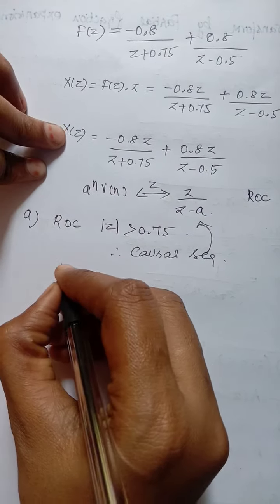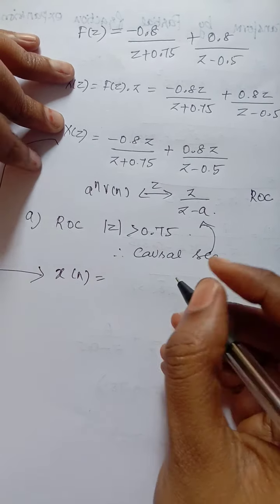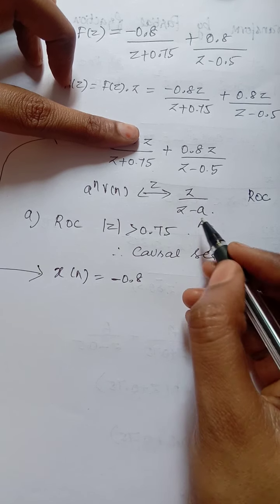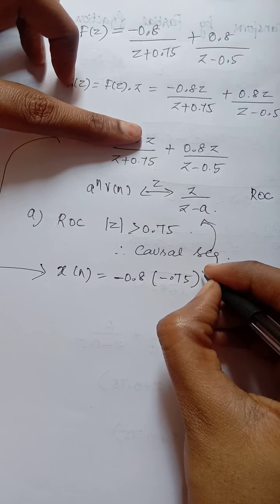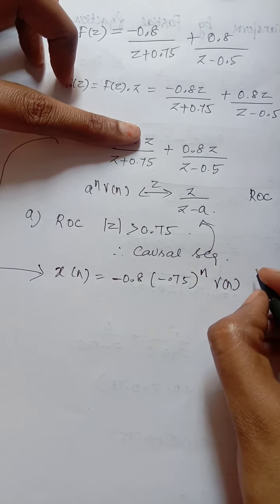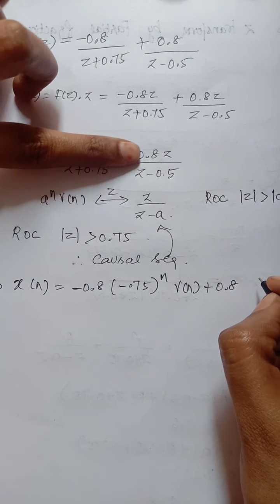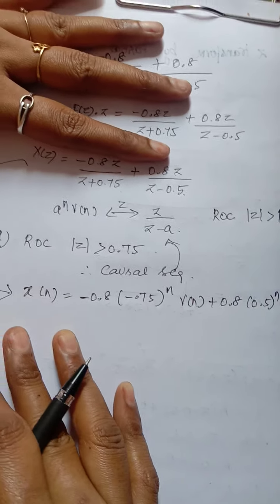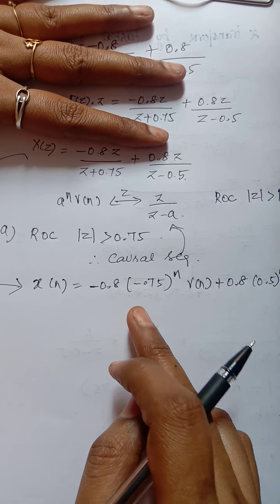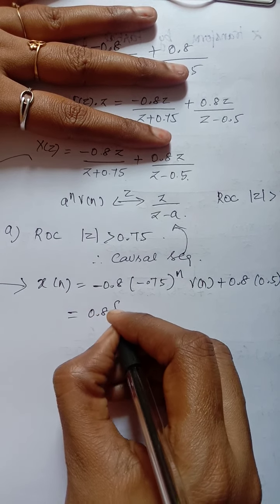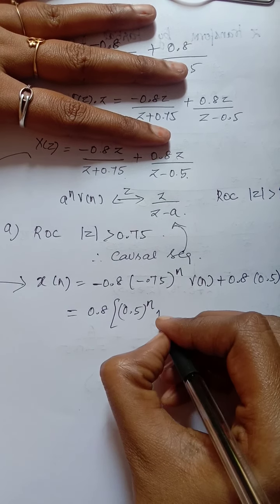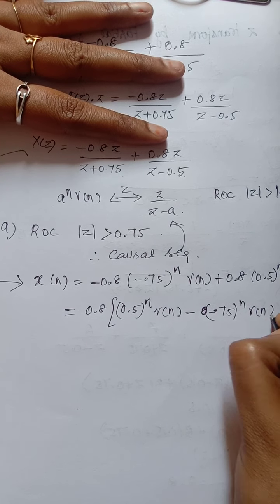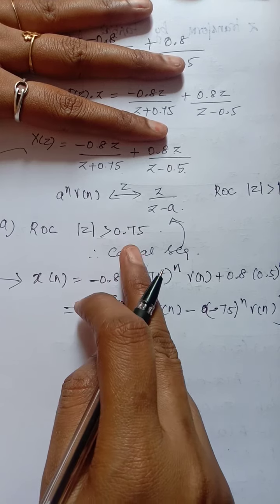For the causal sequence (ROC: |z| > 0.75), the inverse Z-transform is: x(n) = −0.8(−0.75)ⁿu(n) + 0.8(0.5)ⁿu(n), which can be written as 0.8[(0.5)ⁿ − (−0.75)ⁿ]u(n). This is the answer for ROC |z| > 0.75.